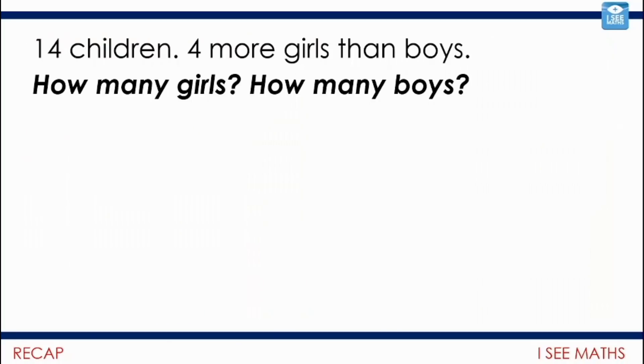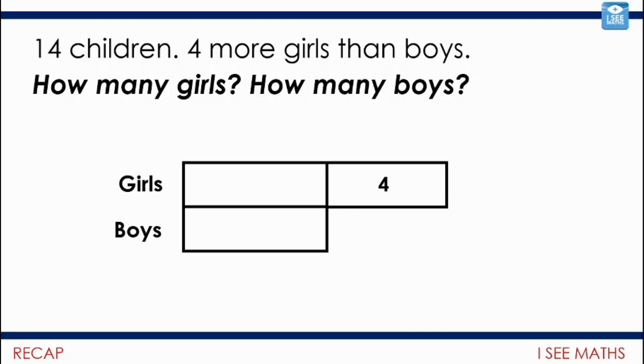We've been looking at these sum and difference puzzles, like this one: 14 children, four more girls than boys, how many girls, how many boys? We decided there's more girls than boys, a bar model can represent that, the difference is four, and then we need to think how many more children. It'll be ten more, equally split between girls and boys—five more girls, five more boys—so nine girls and five boys.